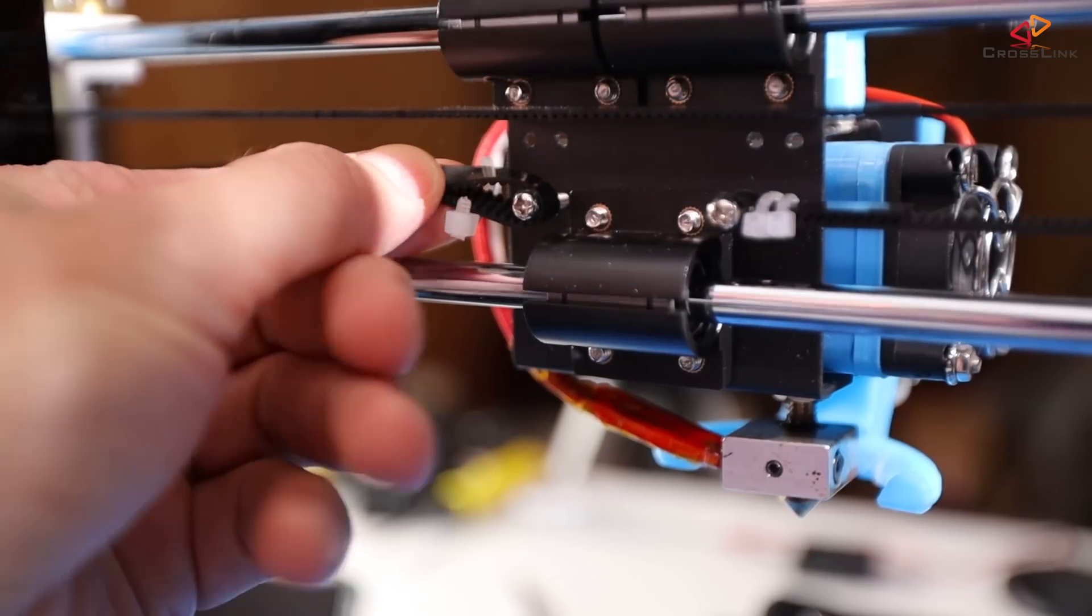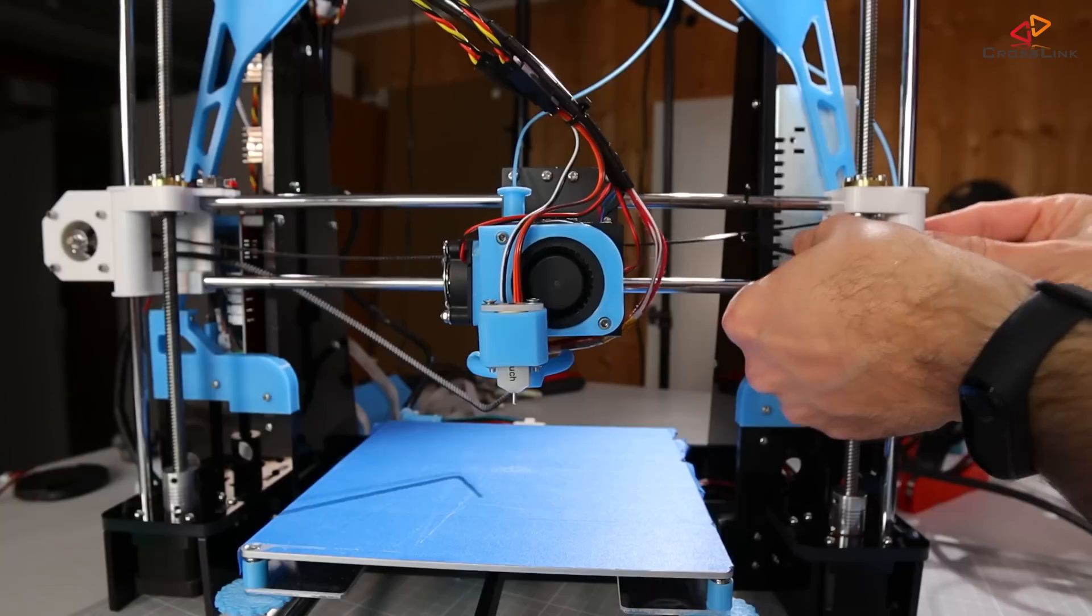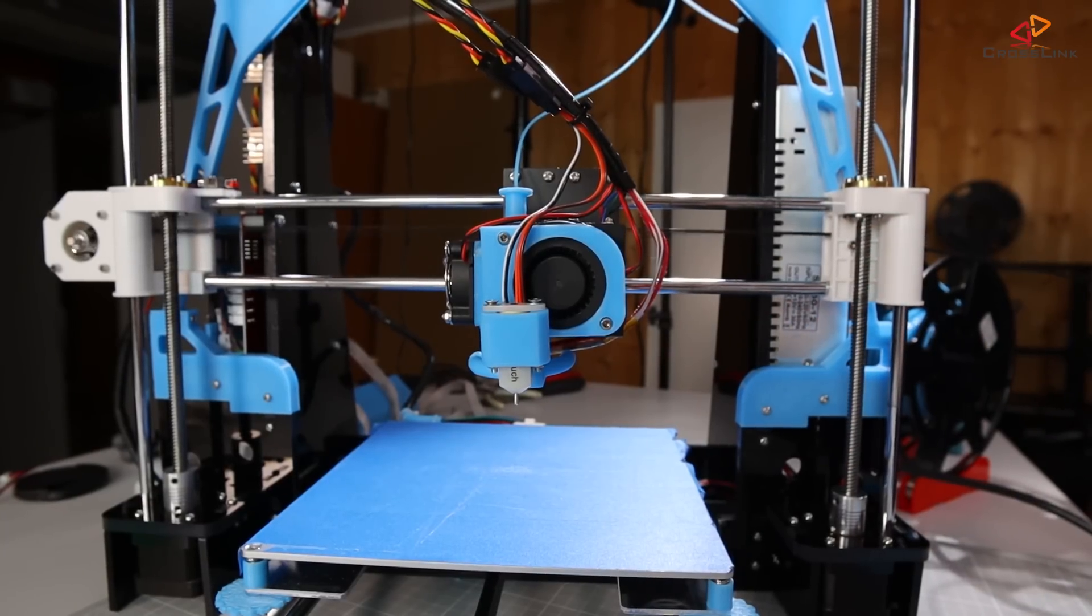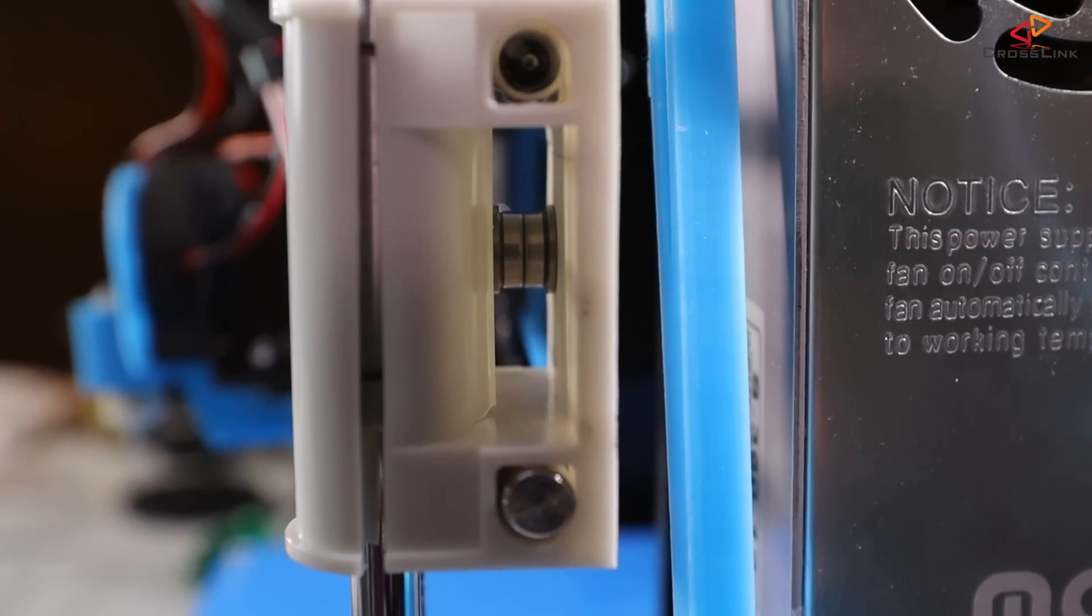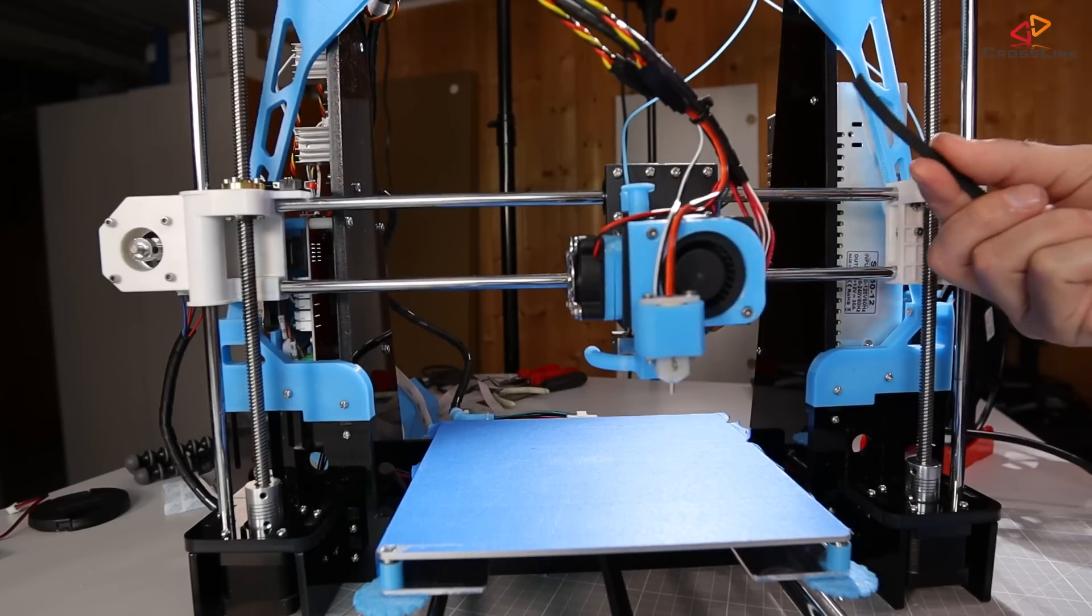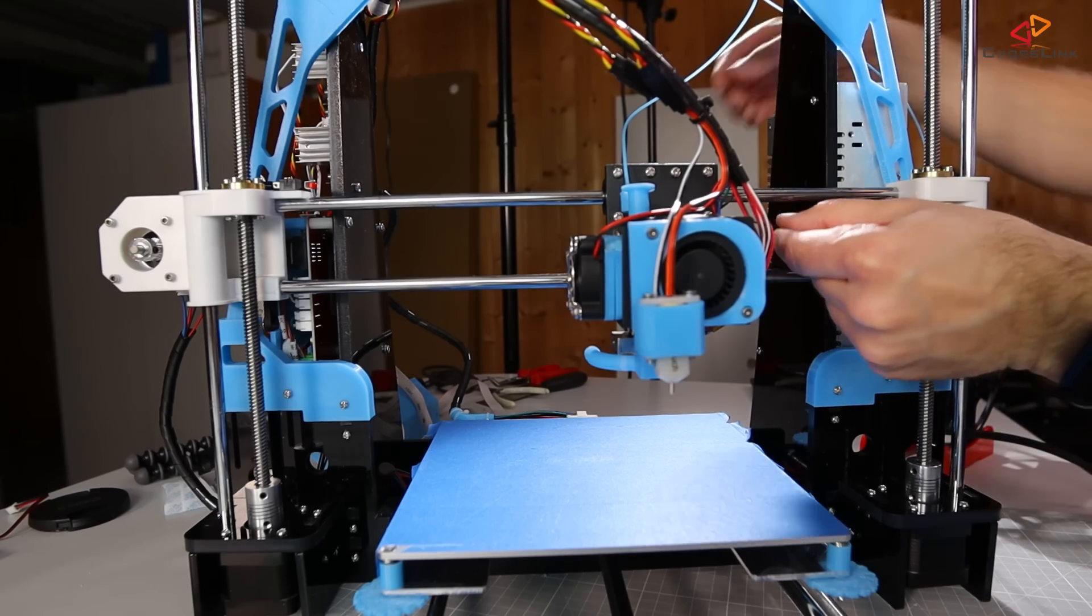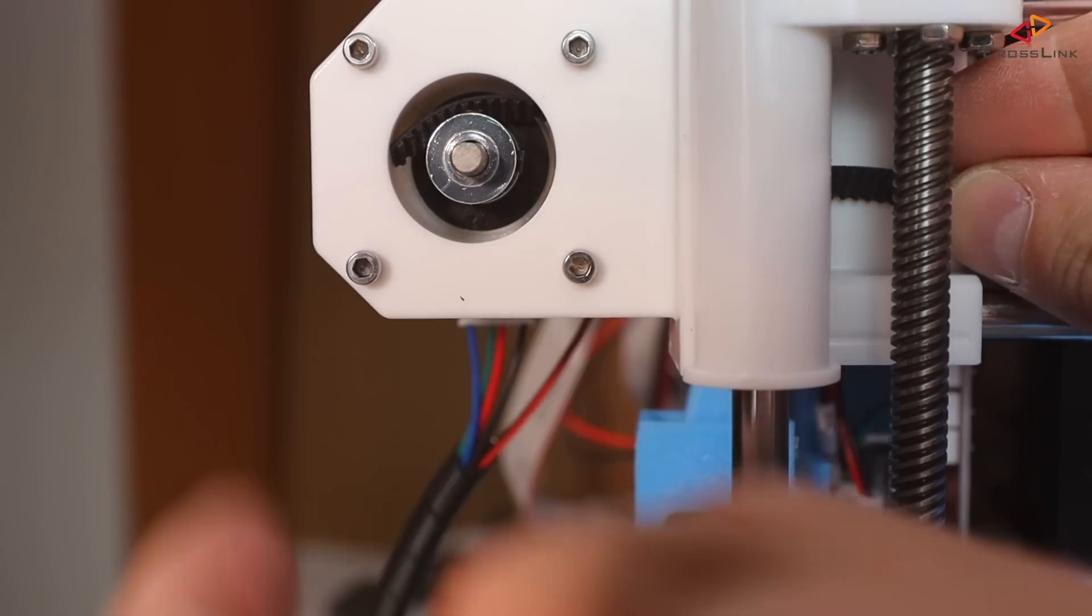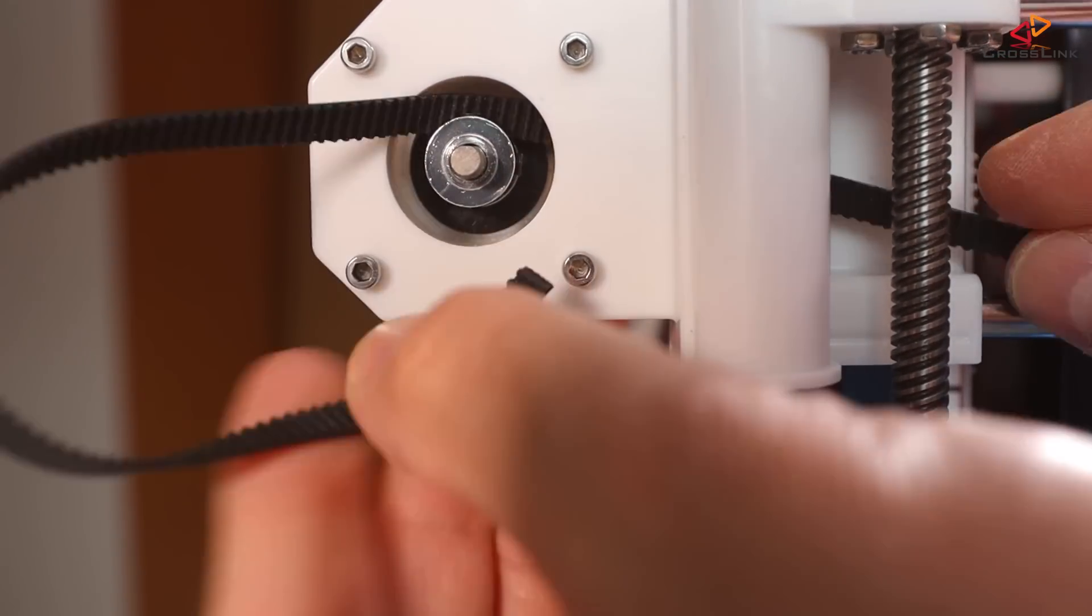Now let's remove the old belt from the carriage. I will leave the old pulley where it is because it does not disturb the new belt and tensioner. Now take the new belt with the teeth facing down and pull it through the right X-carriage mount above the old pulley. Then insert the belt into the left X-carriage mount on the upper end. Wrap it around the motor and feed it back into the carriage mount so it comes out at the right side again.